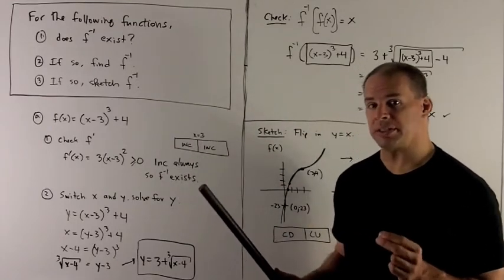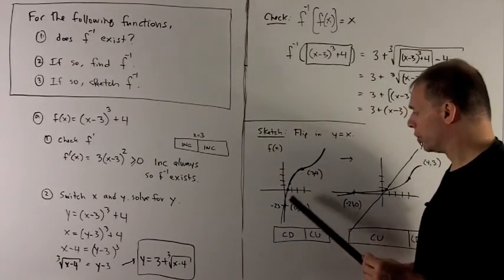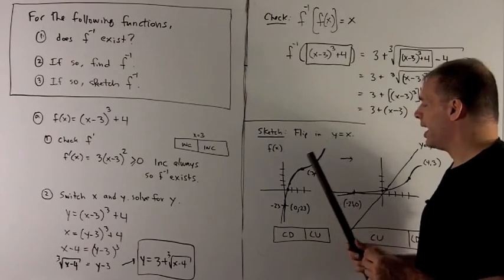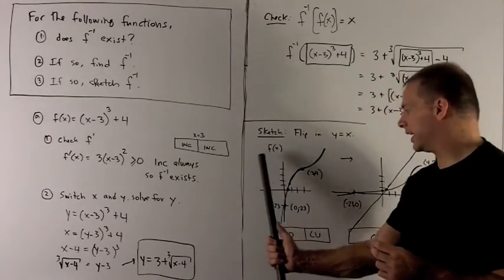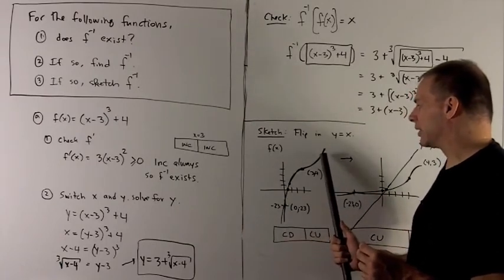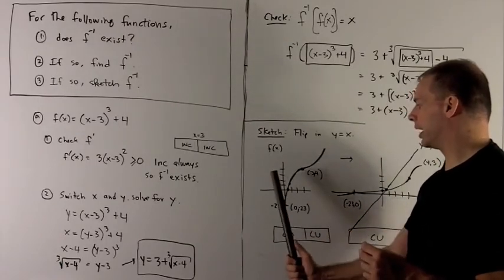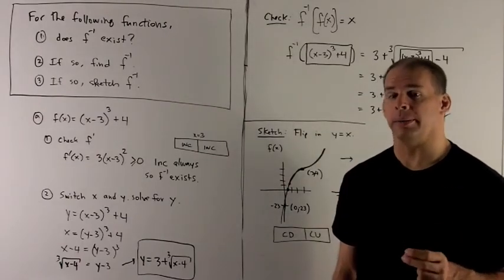So that means we're increasing everywhere, so f inverse exists. If you want to take it one step further, we can look at the graph. You'll notice that this is increasing everywhere, and also it satisfies the horizontal line property, meaning if I take any horizontal line, we're going to wind up cutting the graph in exactly one spot. You can check that just by looking. So that means my function is 1 to 1.